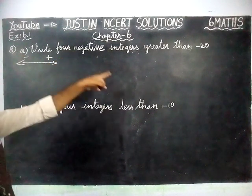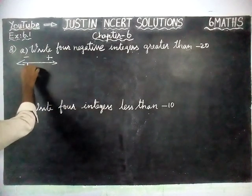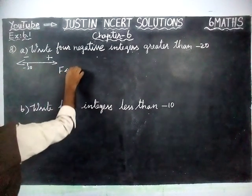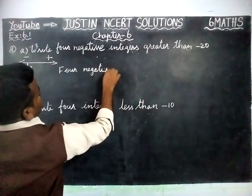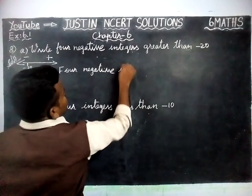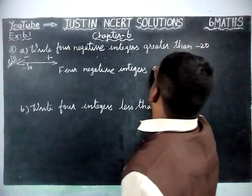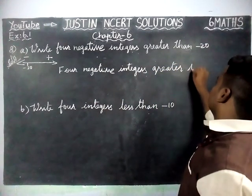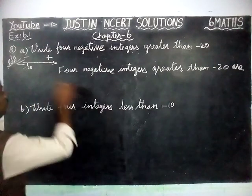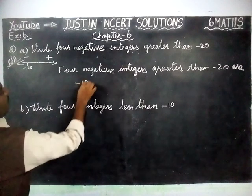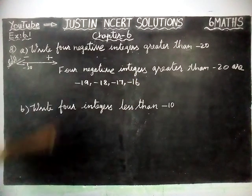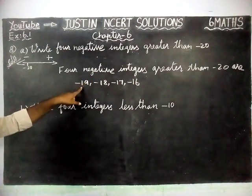Write 4 negative integers greater than minus 20. If minus 20 is here, we have to move right hand side. 4 negative integers greater than minus 20, from here, right hand side: minus 19, minus 18, minus 17, minus 16. So we move right hand side.